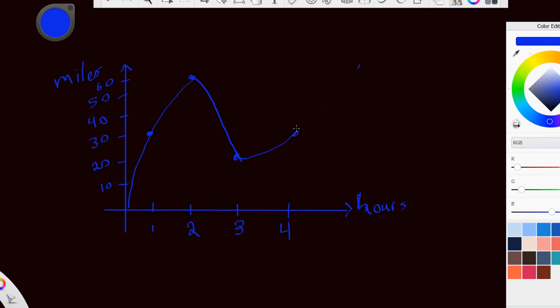Now, let's say I wanted to find the average rate of change between time two and three. Well, if I want to find the average rate of change between hour two and hour three, what that means is I'm going to be looking for the slope of the secant line that connects those two points.